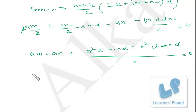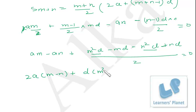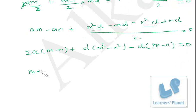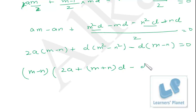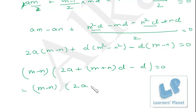Taking 2a as common and d as common: 2a(m−n) + d(m²−n²) − d(m−n) = 0. Since m²−n² = (m+n)(m−n), taking (m−n) as common gives: (m−n)[2a + (m+n)d − d] = 0, which is (m−n)[2a + (m+n−1)d] = 0.